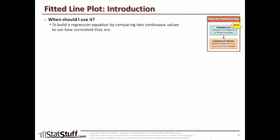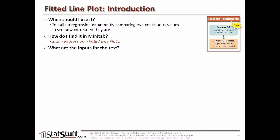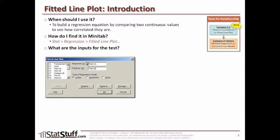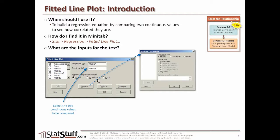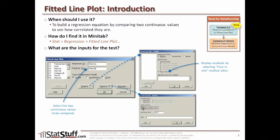Now let's dig into the fitted line plot and how to run it from within Minitab. We run the fitted line plot when we want to build a regression equation by comparing two continuous values to see how correlated they are, giving us an r-squared or r-squared adjusted value. Go to Stat, then Regression, and select Fitted Line Plot. In the dialog box, plug in the two values — the y-value and the x-value. I also recommend selecting the Graphs button and choosing the four-in-one for residual plots, and selecting the Options button to display the confidence interval and prediction interval.